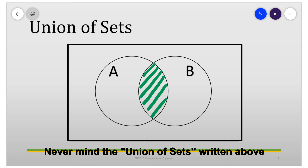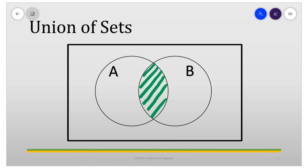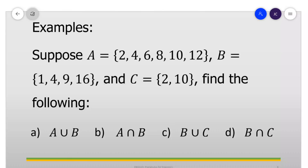That is the intersection of sets A and B. To illustrate union and intersection of sets further, let us answer this example. Suppose set A equals {2, 4, 6, 8, 10, 12}, set B equals {1, 4, 9, 16}, and set C equals {10, 2}.